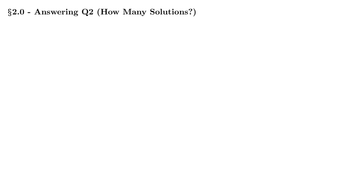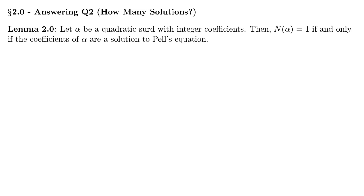Moving on to section 2, answering the second question: how many solutions does Pell's equation have? Starting with Lemma 2.0: let alpha be a quadratic surd with integer coefficients. Then the norm of alpha equals 1 if and only if the coefficients of alpha are a solution to Pell's equation. This is why we work with quadratic surds and the norm — given any quadratic surd, it's straightforward to compute its norm, and if that equals 1, the coefficients are a solution to Pell's equation.